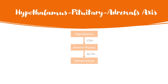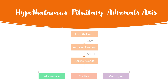And then this ACTH acts on the adrenal glands, triggering the release of three key hormones: aldosterone and other mineralocorticoids, cortisol and other glucocorticoids, and androgens. It's important to note that this whole process is governed by a negative feedback loop, so as the levels of these hormones increase, it feeds back on the system, preventing further release from the anterior pituitary and the hypothalamus.